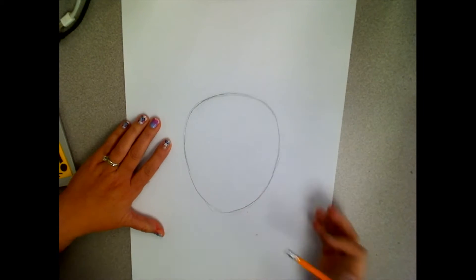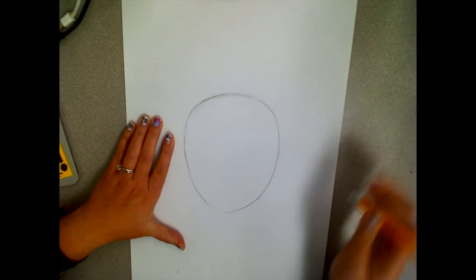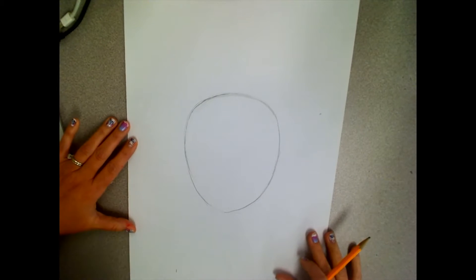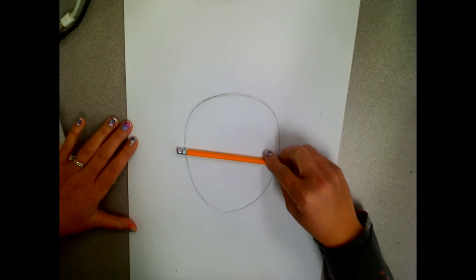Once you've darkened your lines, the next thing to do is draw your eyes. Now your eyes don't need to be drawn on your forehead. They need to be drawn on the middle of your face. So I use my pencil to find the middle of my face.